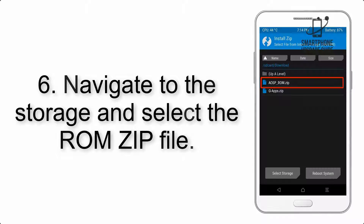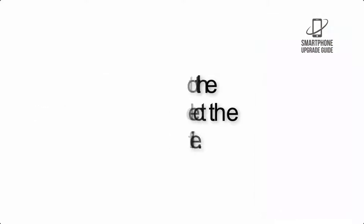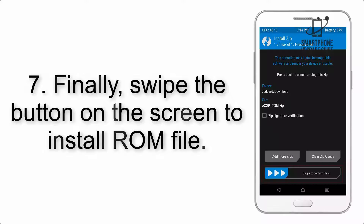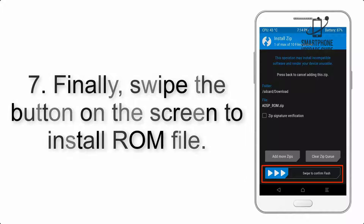Step 6: Navigate to the storage and select the ROM zip file. Step 7: Finally, swipe the button on the screen to install the ROM file.